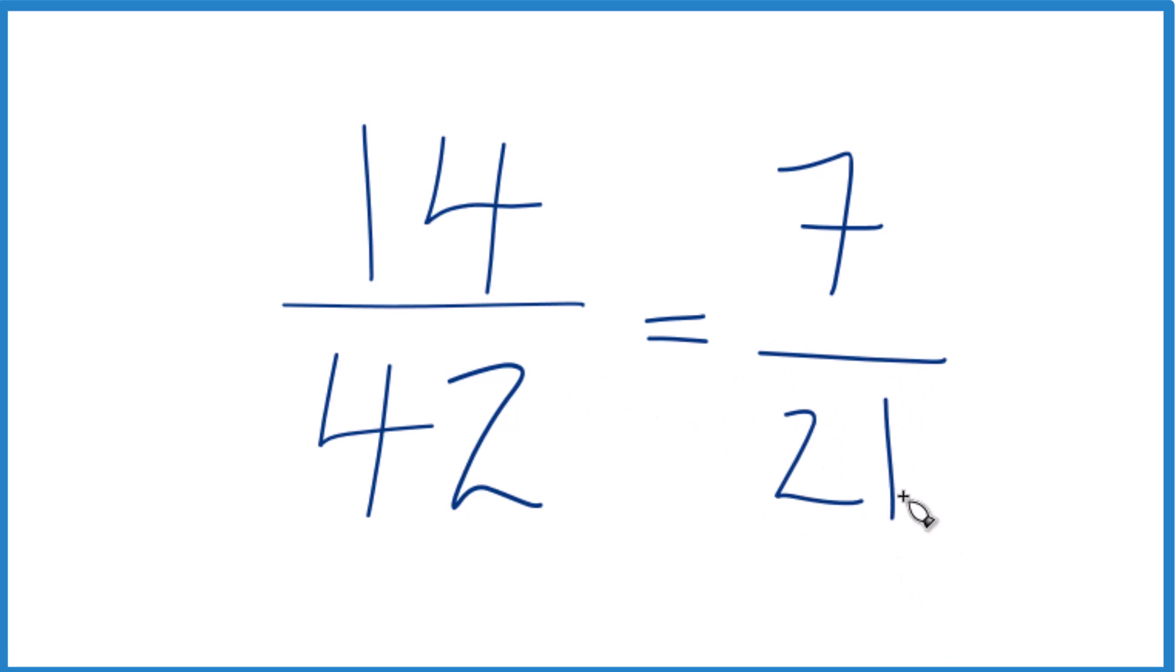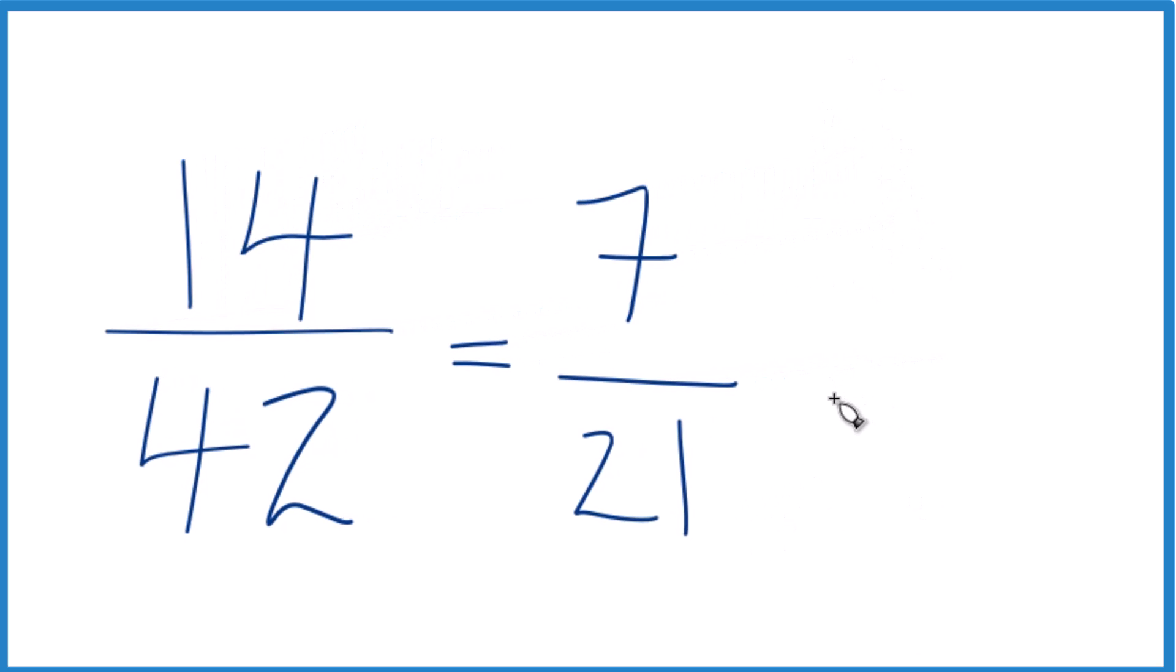This is a little bit easier to look at. I can see that 7 goes into itself and 21 evenly. So I could just say 7 divided by 7 is 1, and then 21 divided by 7, that's 3.